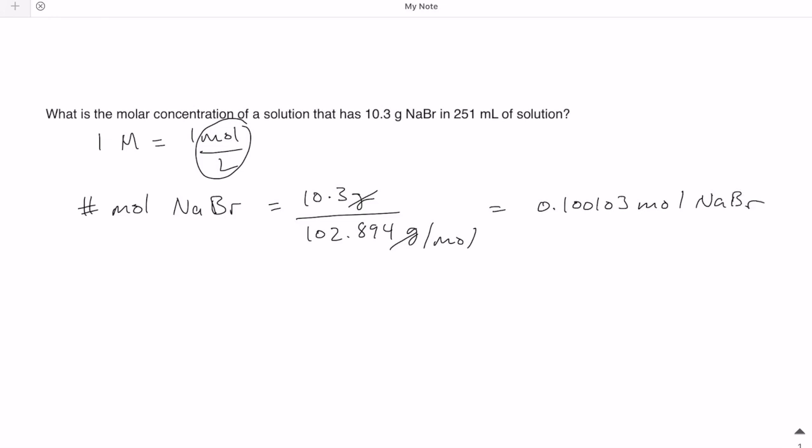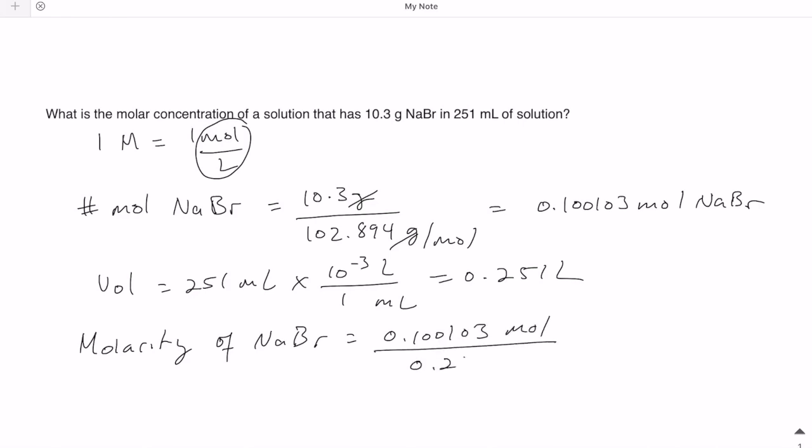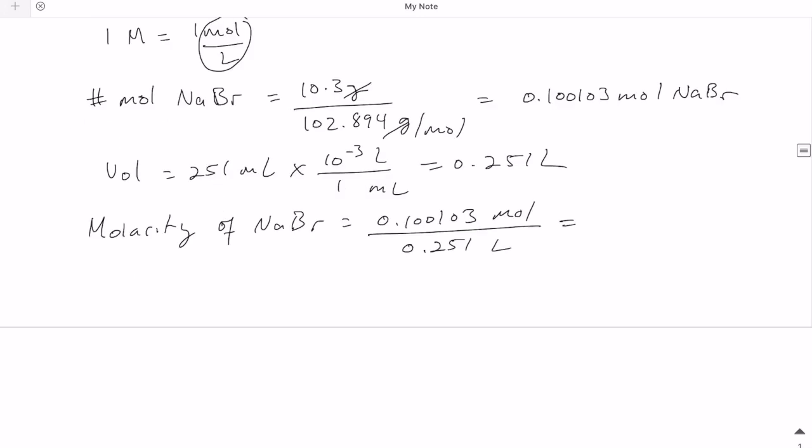Now we need to figure out the volume in liters. The volume is 251 milliliters, which converts to 0.251 liters. So the molarity of NaBr is 0.100103 moles over 0.251 liters, which gives us 0.399 moles per liter, or 0.399 molar.